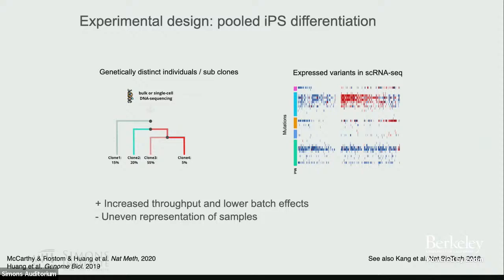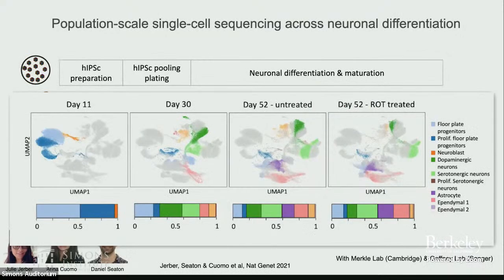There is a downside to pooling: you create very uneven representations of samples — you don't get the same number of cells from each individual, which you have to deal with in downstream analysis. Starting with these magenta IPS cells, neurons appear in the green populations, and they also mature. An interesting question is what exactly constitutes a neuron and whether clustering cells discretely makes sense.